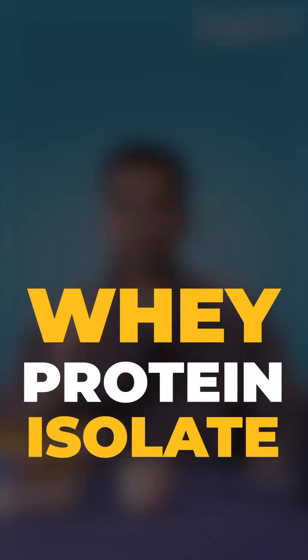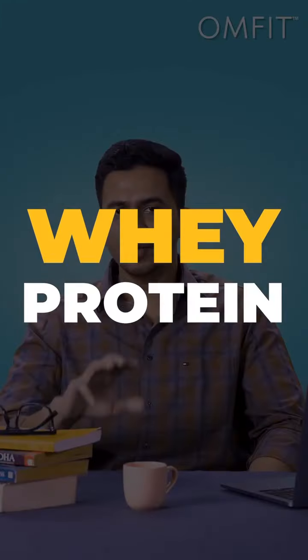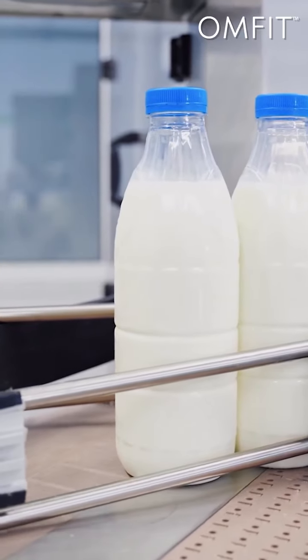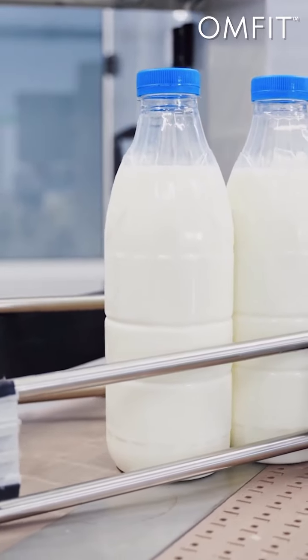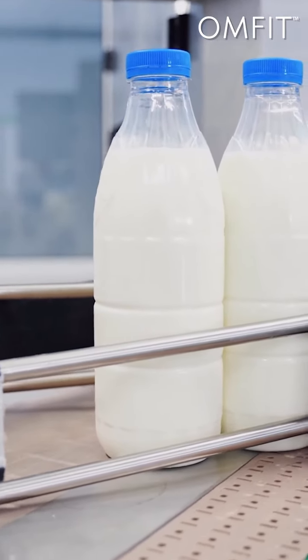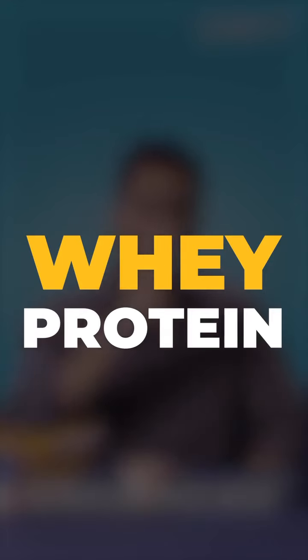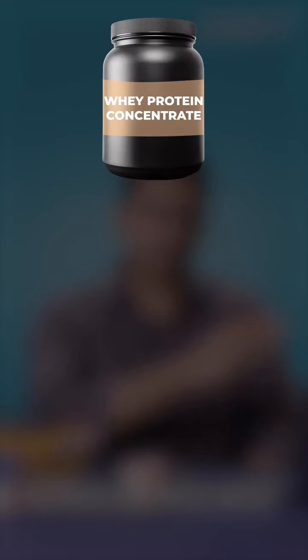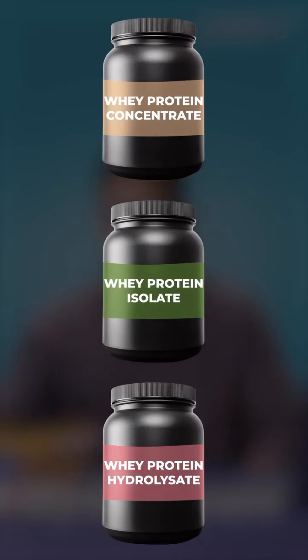The second term is whey protein isolate. Whey protein is actually made from milk — it is a byproduct in the cheese making process. Whey protein comes in three forms: whey protein concentrate, isolate, and hydrolysate.